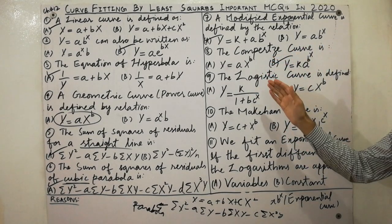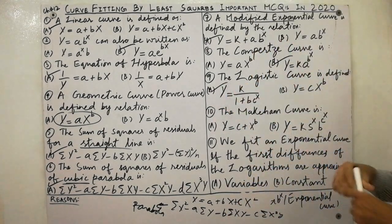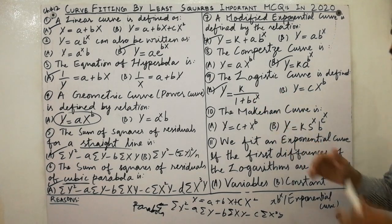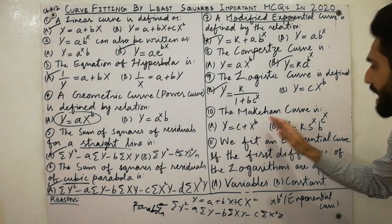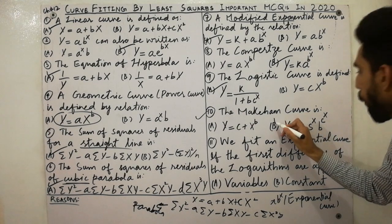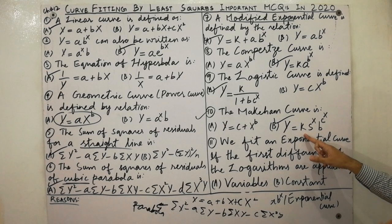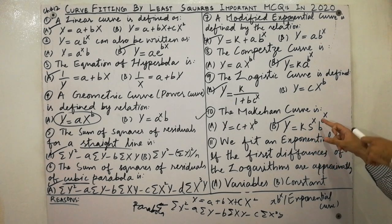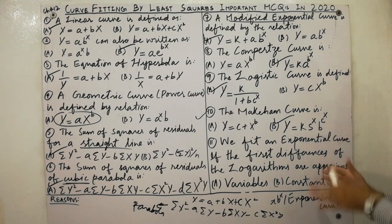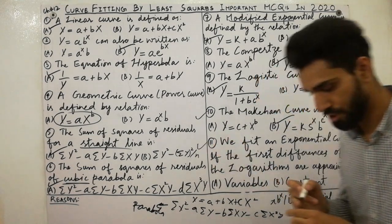The logistic curve is defined as y is equal to k divided by 1 plus b·c raised to the power x. Next, the very important Meecham curve is defined by the relation y is equal to k·s raised to the power capital X, times b raised to the power c, times c raised to the power x.